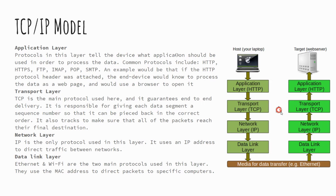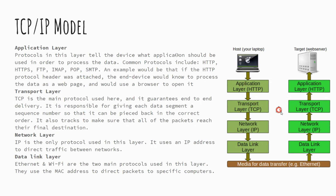Each packet also has the order of where it sits in the file, so when the person receiving it at the other end gets it, they know where it goes in the string of binary data. Think of it like your photo being broken down into tiny puzzle pieces, each one being sent across one by one — with the sender's address, the receiver's address, where in the puzzle it fits, how it's being transmitted, and which application it's used with.